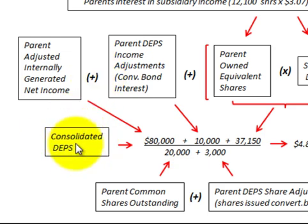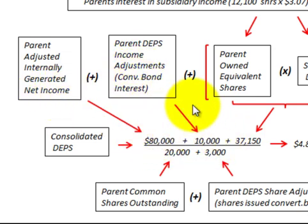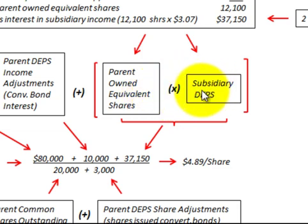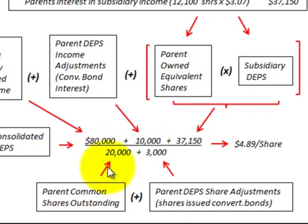Now applying the consolidated diluted EPS formula: we start with $80,000, the parent's adjusted internally generated net income. We add $10,000 for the parent's diluted EPS income adjustments for convertible bond interest. Then we add the quantity of the parent's owned equivalent shares — which we calculated as 12,100 — times the subsidiary's diluted EPS of $3.07, giving $37,150. So our numerator is $80,000 plus $10,000 plus $37,150.